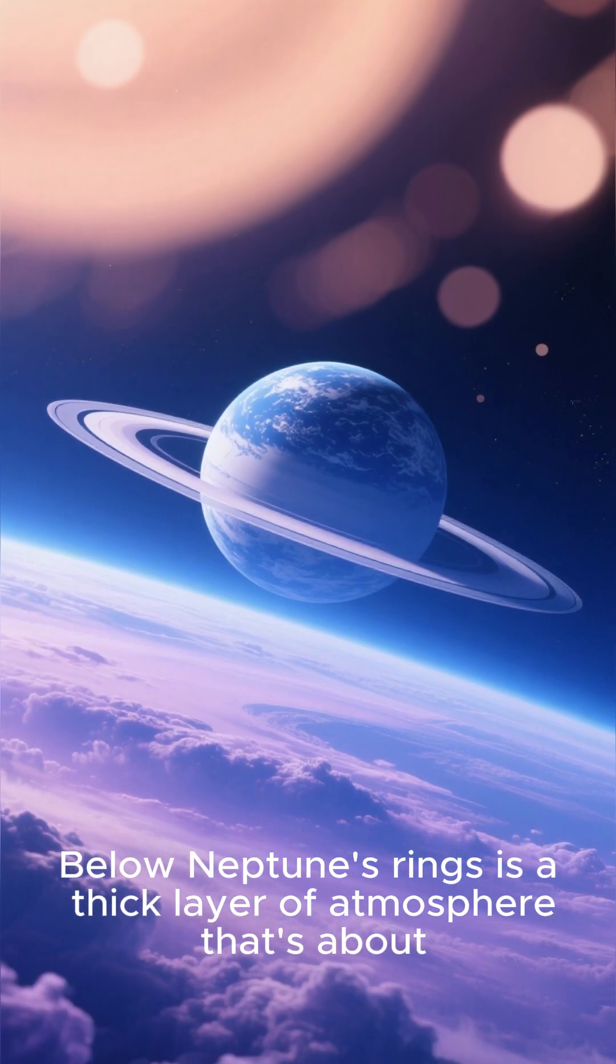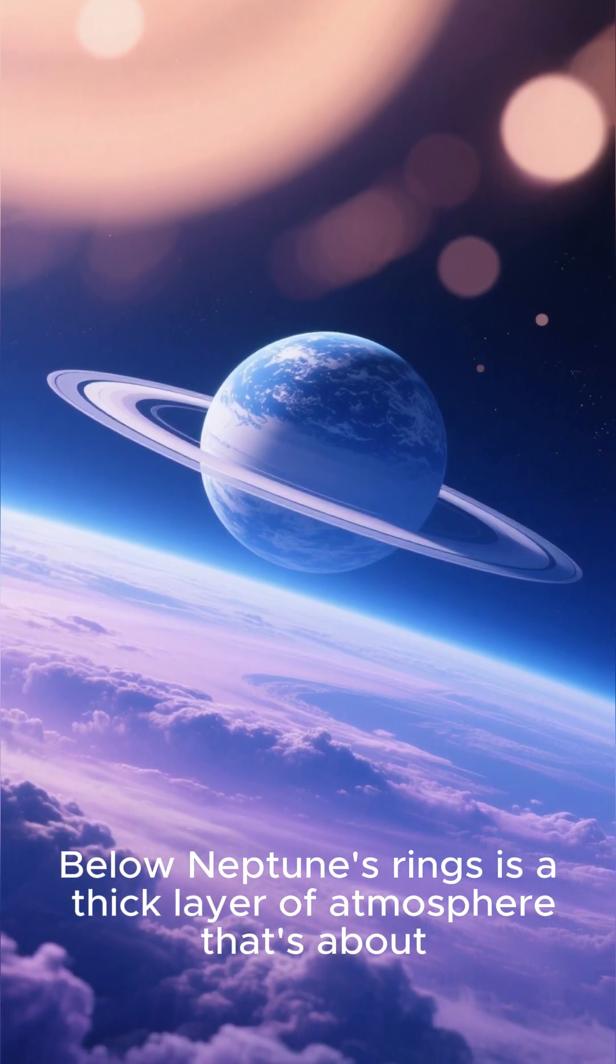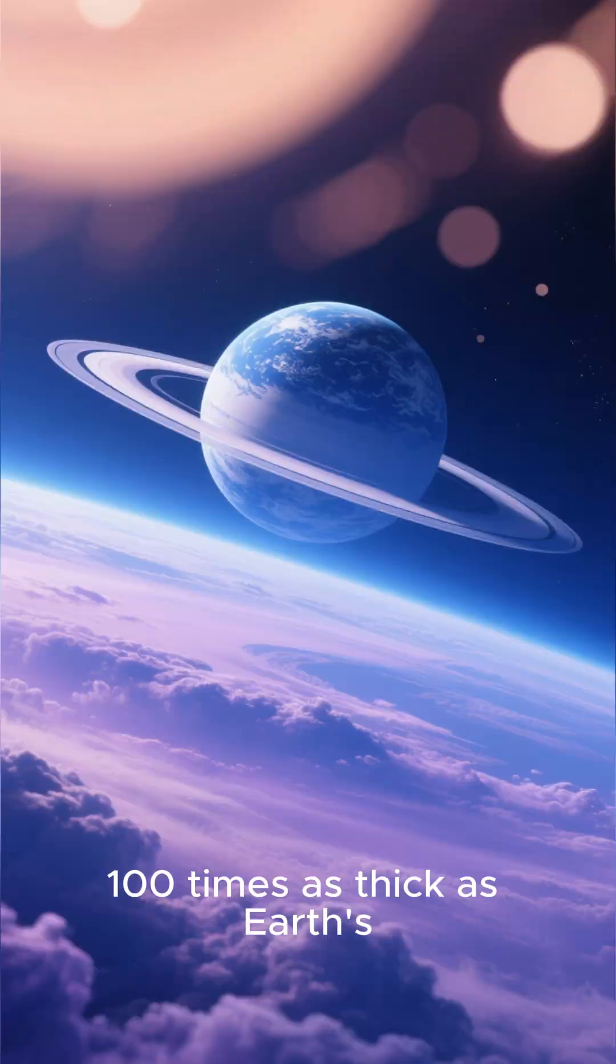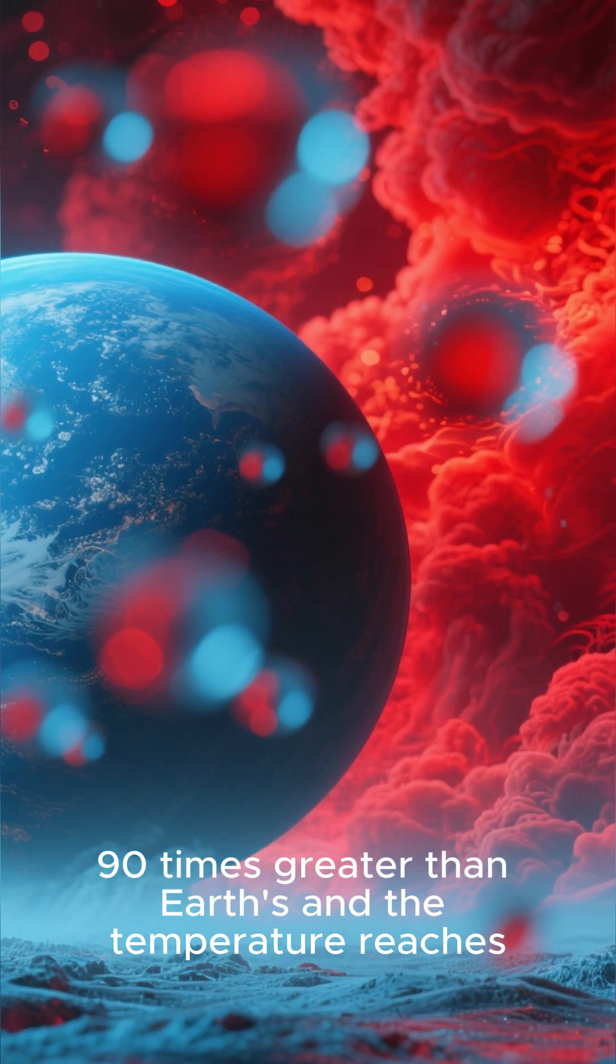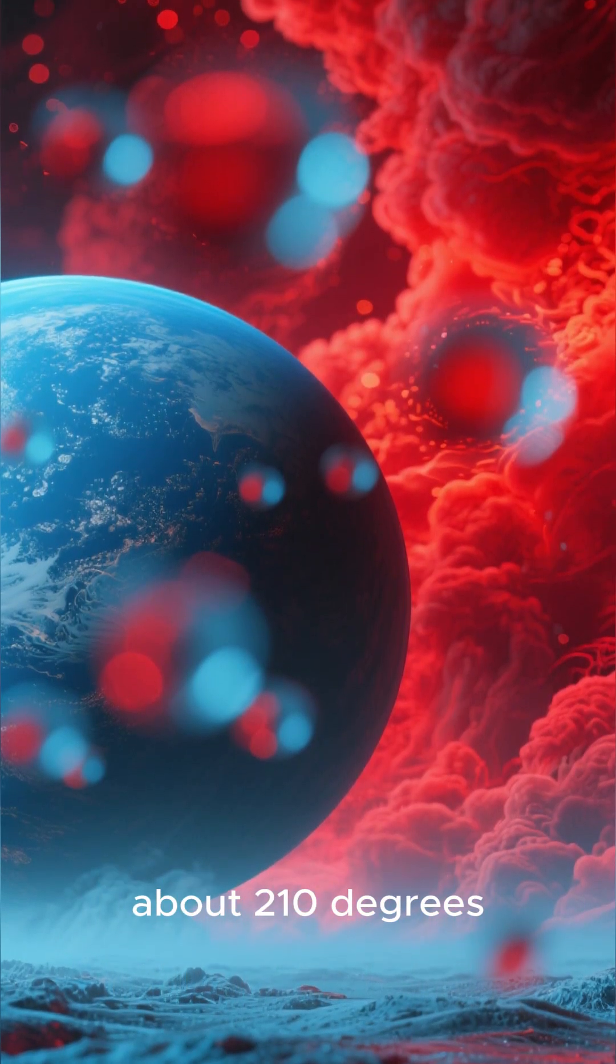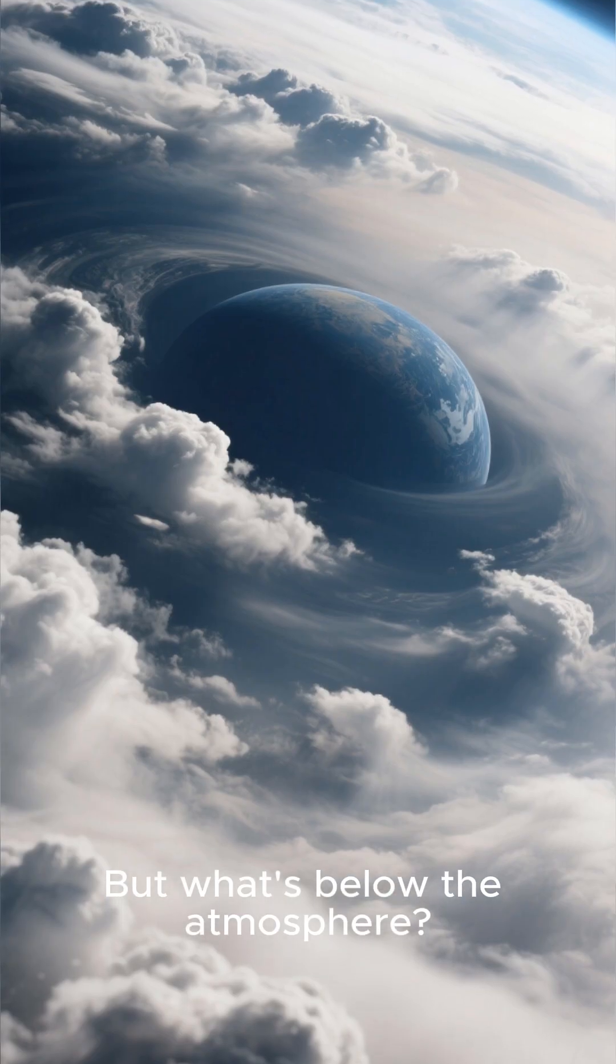Below Neptune's rings is a thick layer of atmosphere that's about 100 times as thick as Earth's. The atmospheric pressure is about 90 times greater than Earth's, and the temperature reaches about 210 degrees Celsius. But what's below the atmosphere?